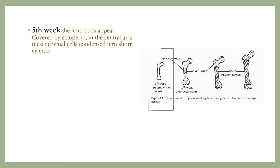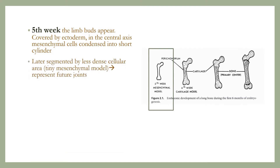During the fifth week of embryonic development, the limb buds appear. Covered by ectoderm in the central axis, the mesenchymal cells condense into a short cylinder. The cylinder is segmented by less dense cellular areas, and these represent future joints.